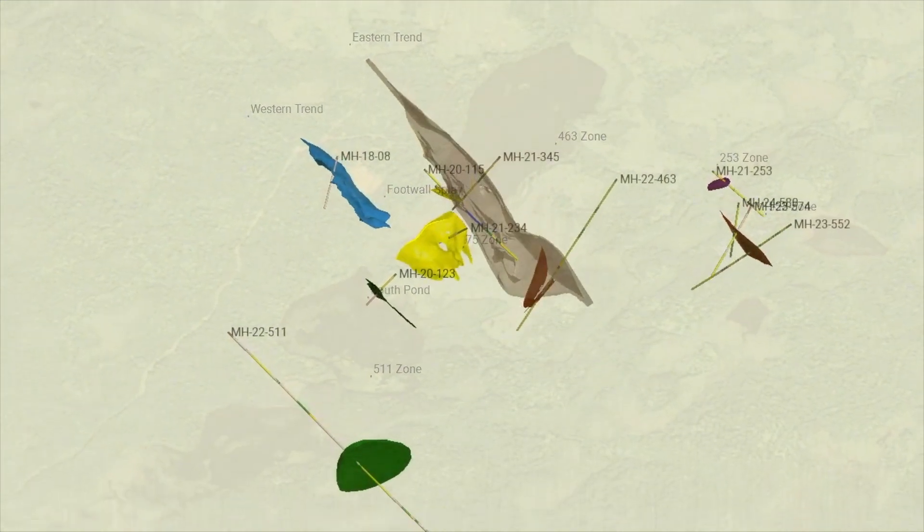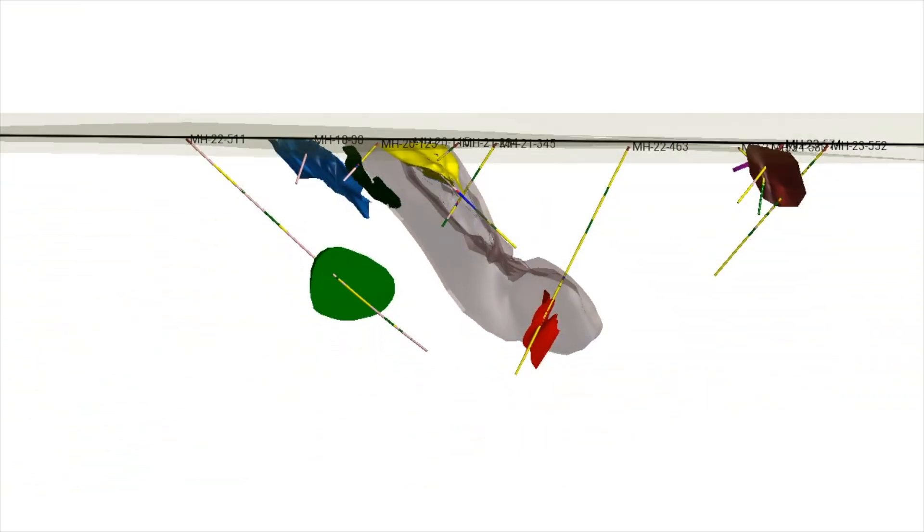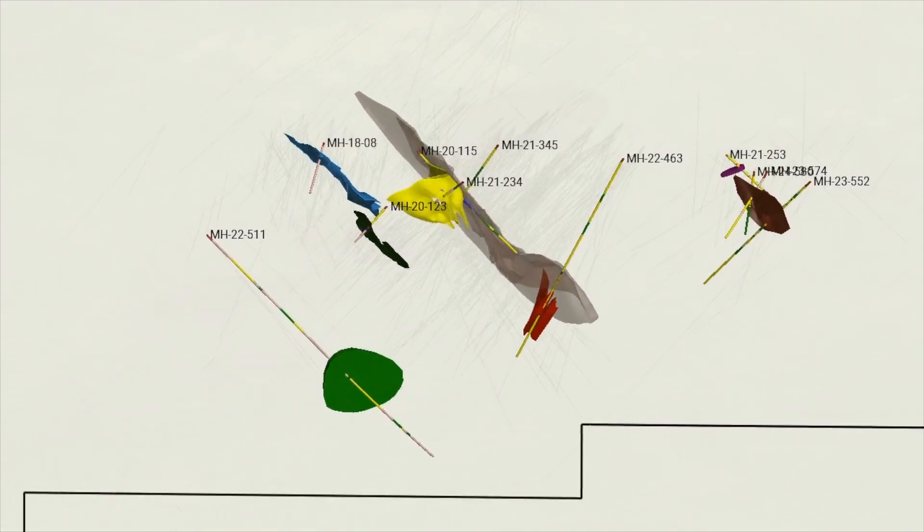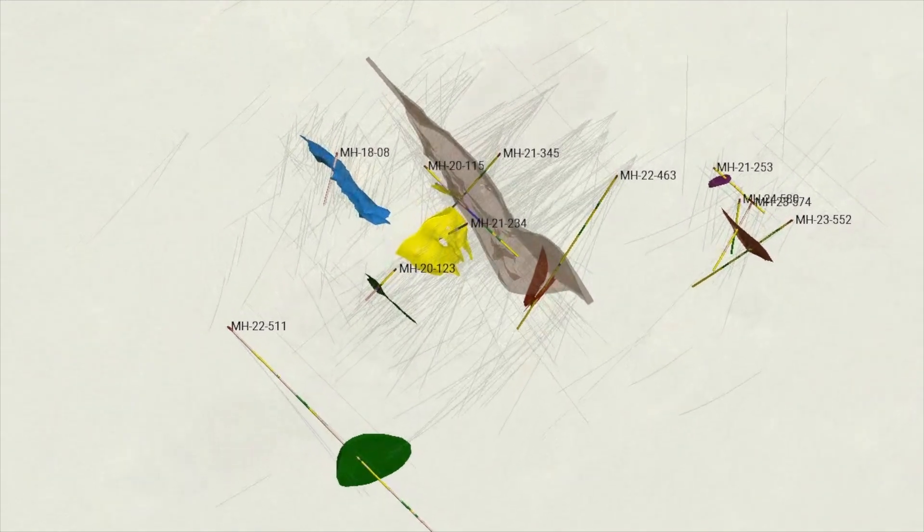There are currently nine zones of gold mineralization on the property. Highlighted here are some of the key holes that define these zones. Seven of the zones carry high-grade VG-bearing quartz veins.